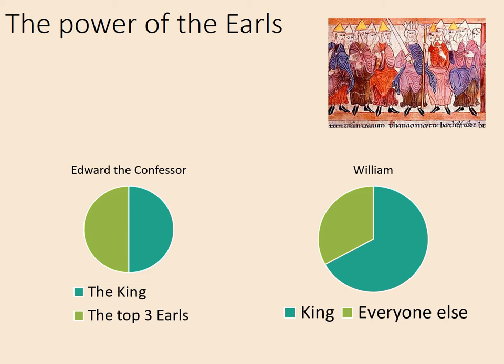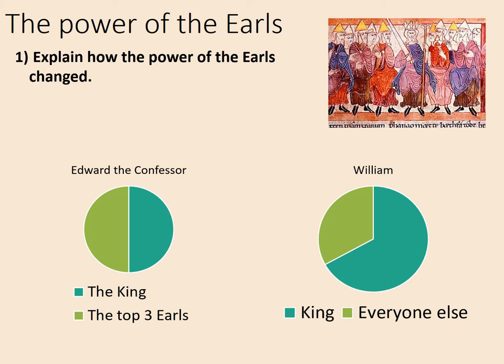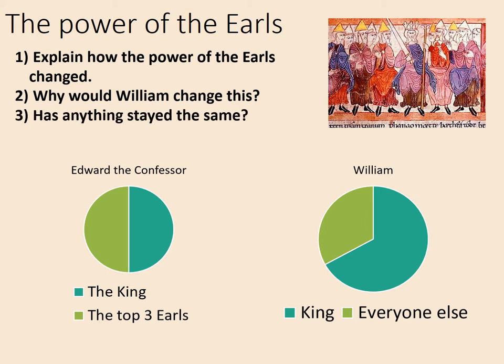Your tasks: note down these diagrams to give you a sense of the power distribution. Also, explain how the power of the earls changed. Then, why would William change this? And thirdly, has anything stayed the same? Pause the video now while you consider these questions.